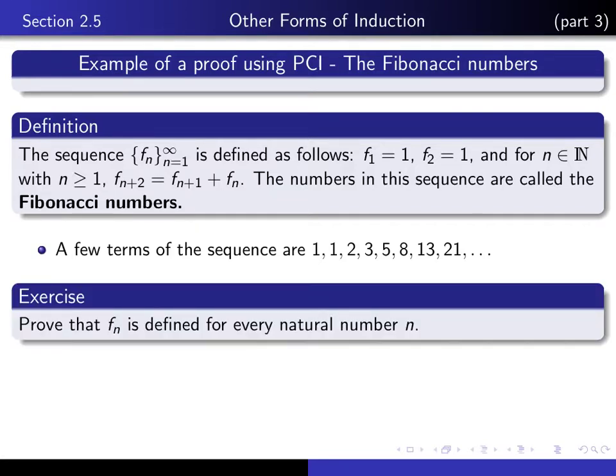The exercise is to prove that f sub n is defined for every natural number n. This is similar to an exercise we considered earlier where we defined inductively the factorial function, the summation function, and the product function, and we used the principle of mathematical induction to show that they were defined for all natural numbers. We can't do that here because it's not the case that each term of the Fibonacci sequence is defined by its immediate predecessor, but rather by a few of its predecessors.